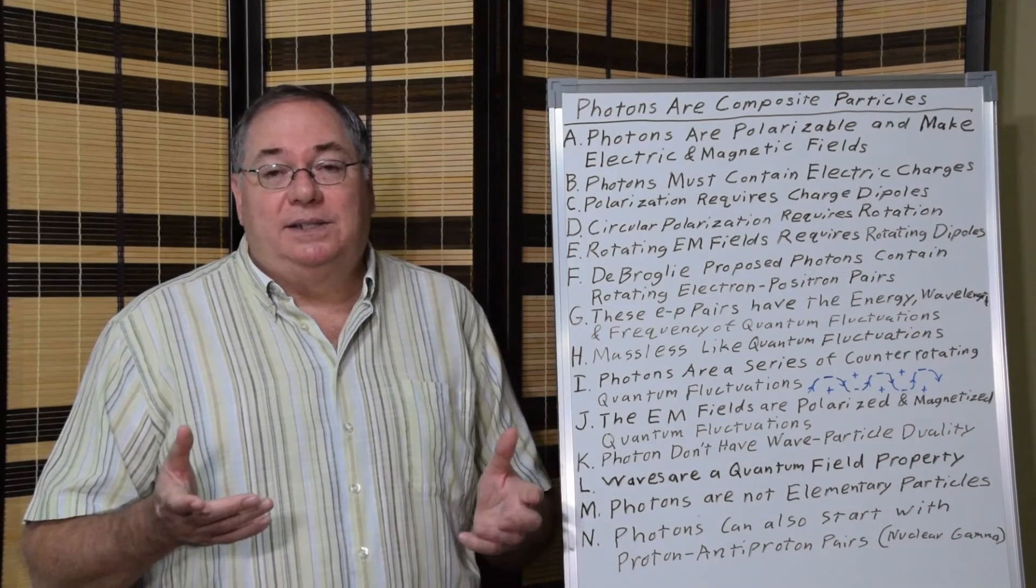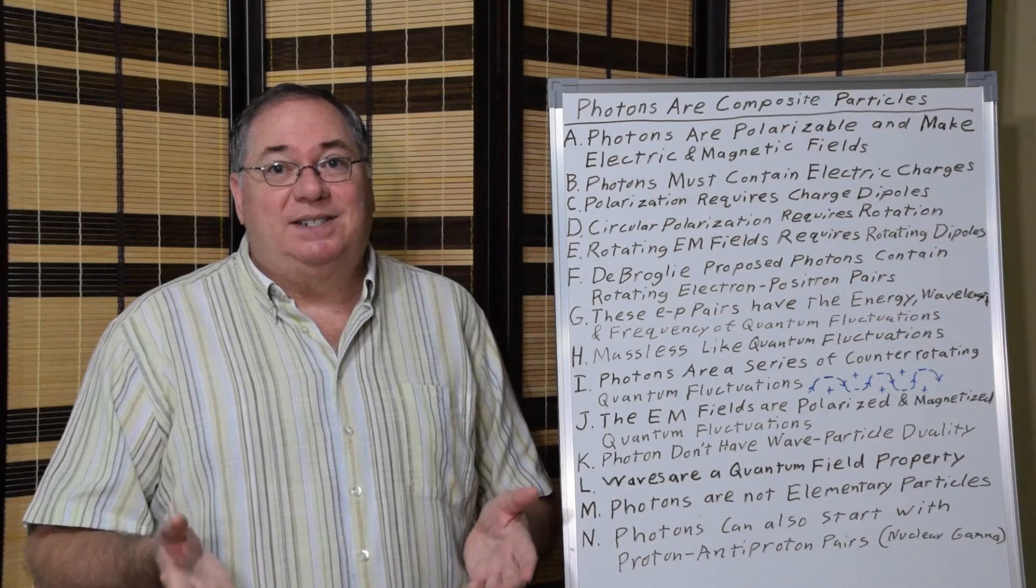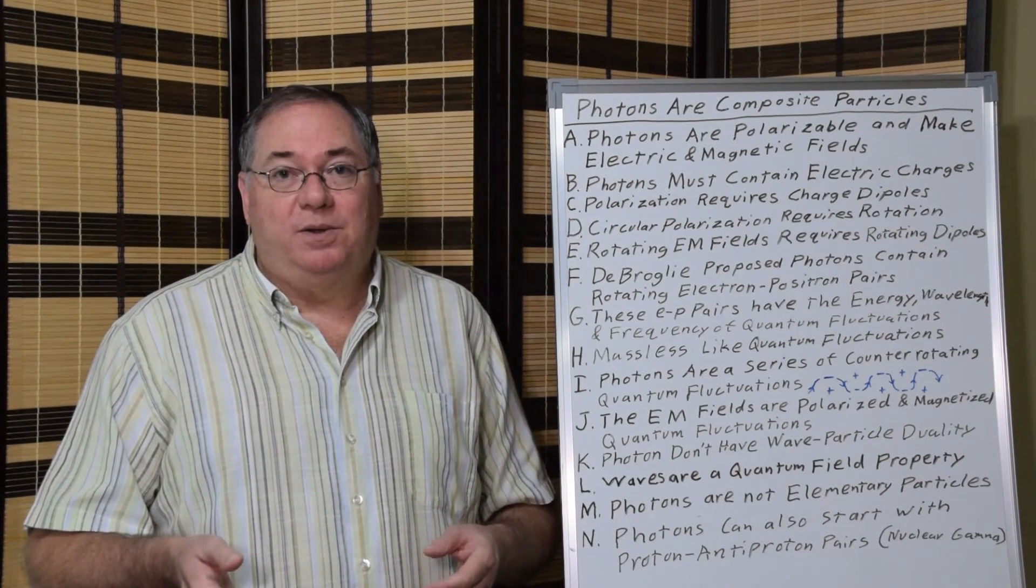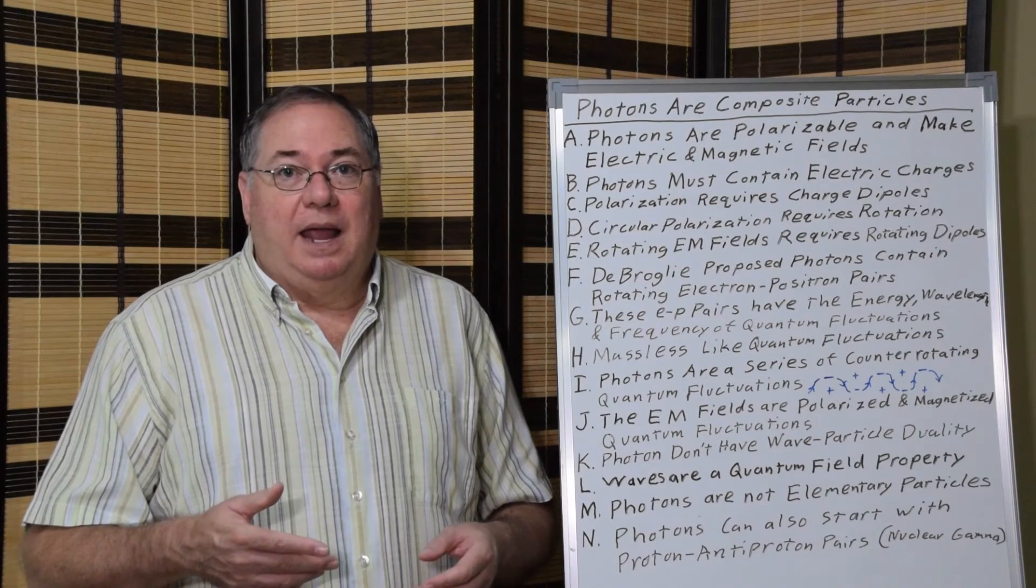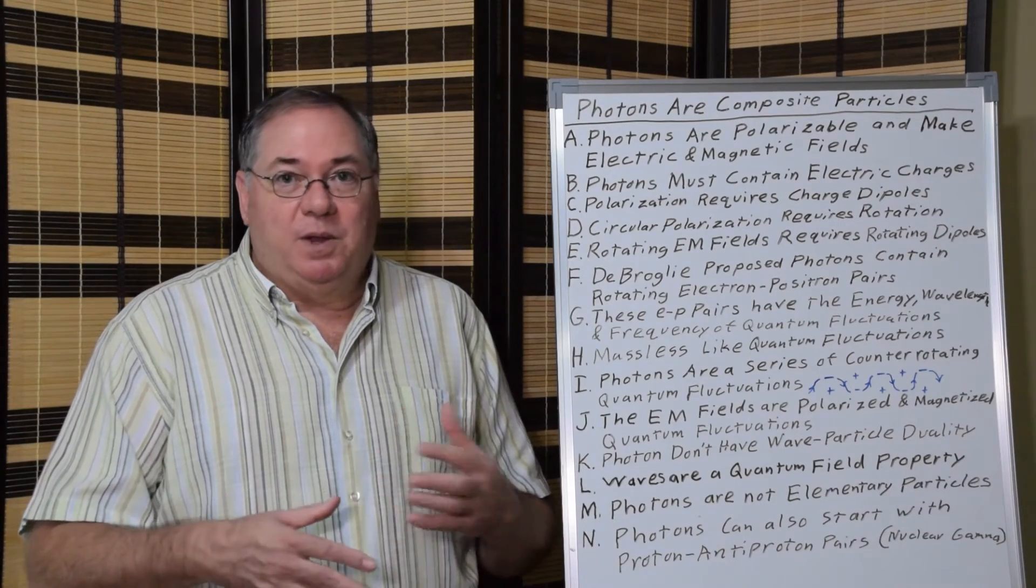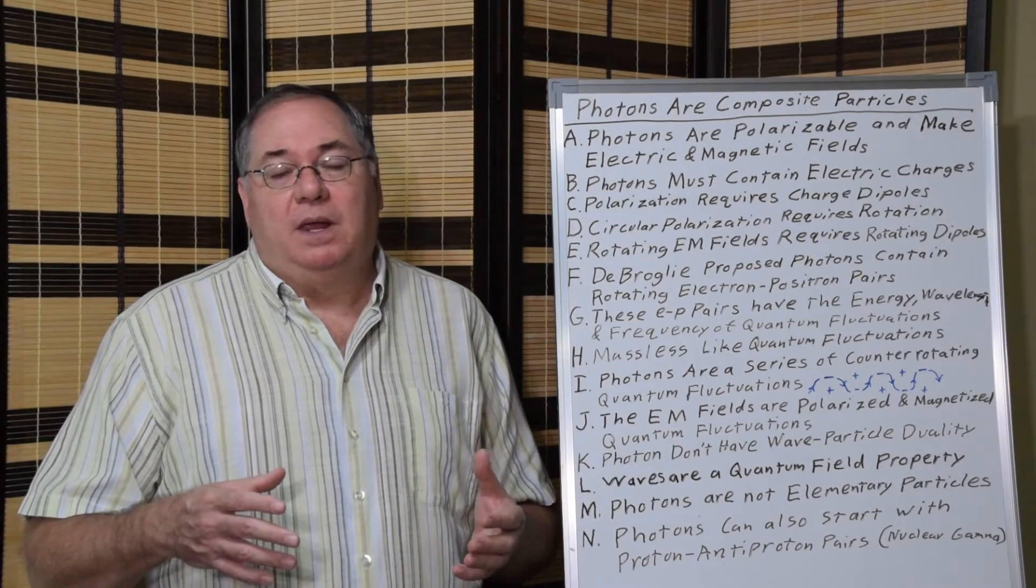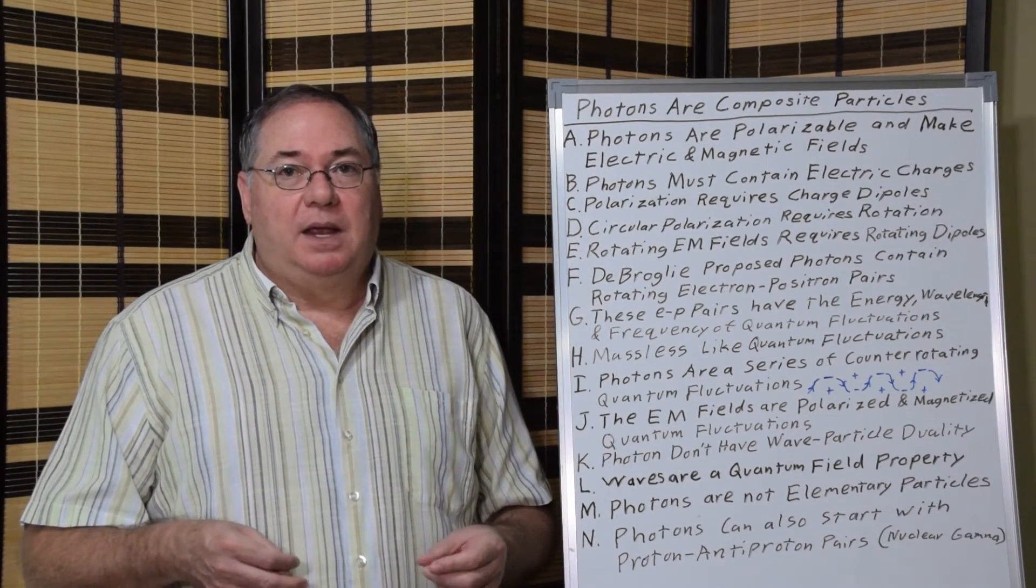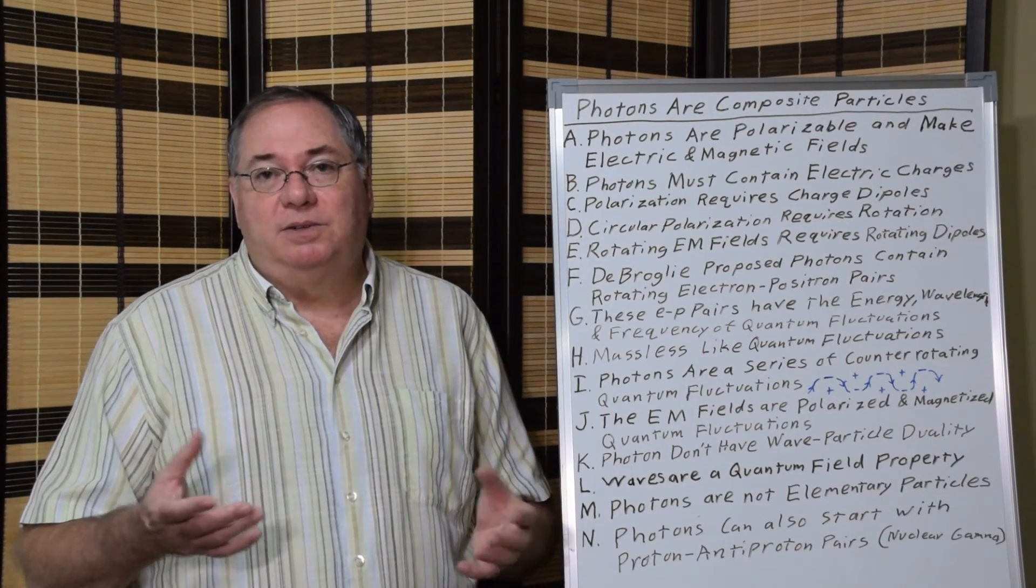So, bottom line is that physics, the real physics, tells us that photons are not an elementary particle, that they're composite. And this quantum particle pair model, beginning with the work that de Broglie did, gives us a workable model to explain how photons really are.